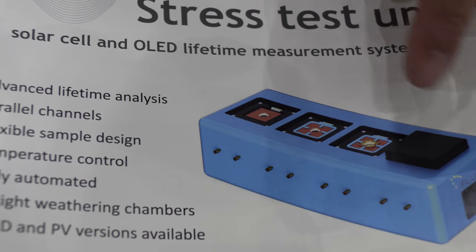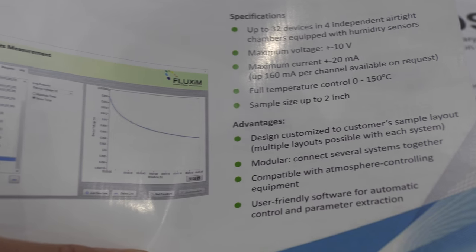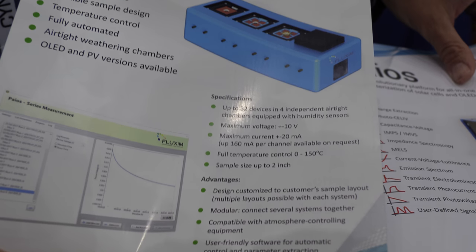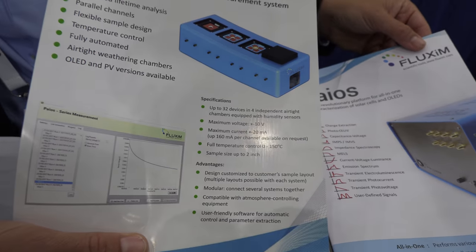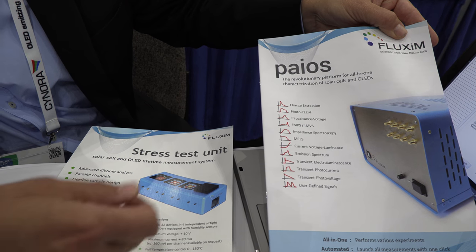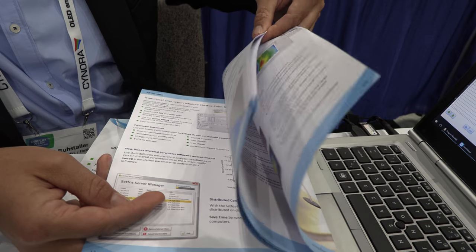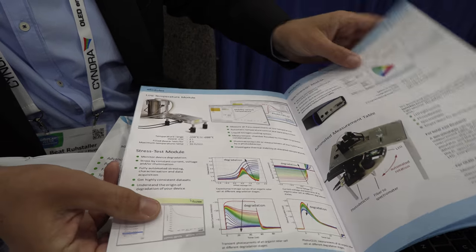Multi-channel stressing can be done here and to monitor the decay of the performance of the OLEDs and then we want to combine it. The user, the customer can do this in combination with this other instrument. At every 15 minutes after stressing, we would re-measure the device performance and we already have some examples here.